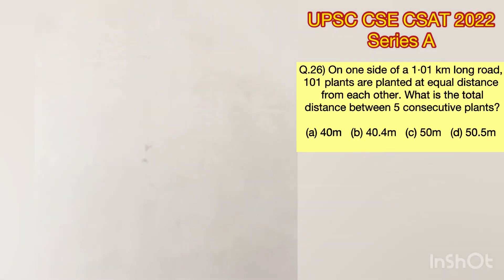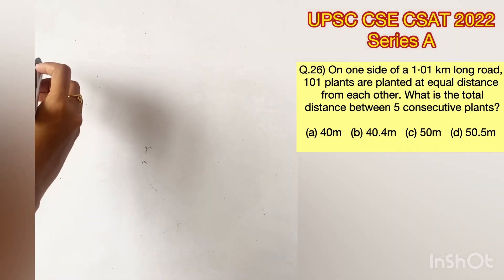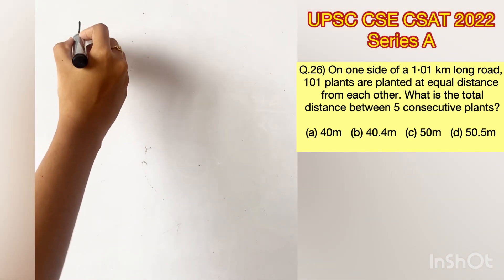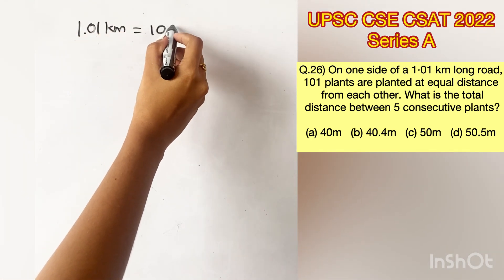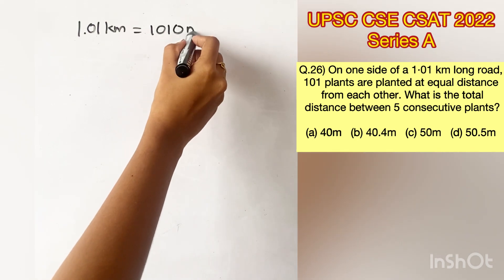On one side of a 1.01 km long road, 101 plants are planted at equal distance from each other. What is the distance between 5 consecutive plants? So 1.01 km can be written as 1010 m because 1 km is equal to 1000 m.